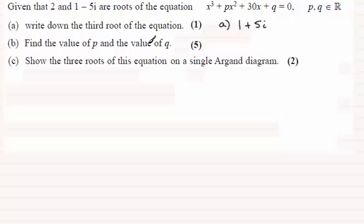Okay, now in part b we've got to find the value of p and the value of q for this equation. So let's just write that out. We've got x cubed plus px squared plus 30x plus q. And we know that if we have say x is equal to 2, then x minus 2 would be a factor.